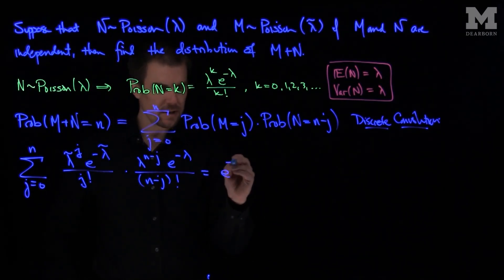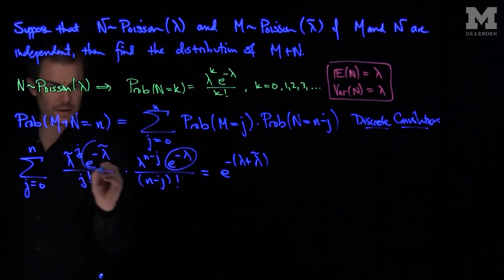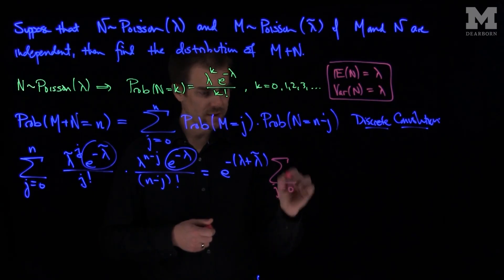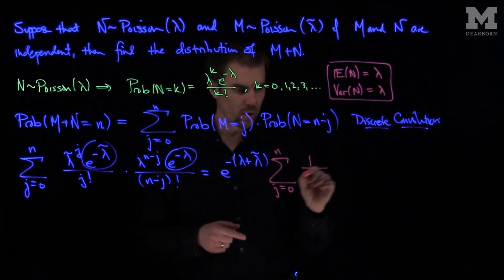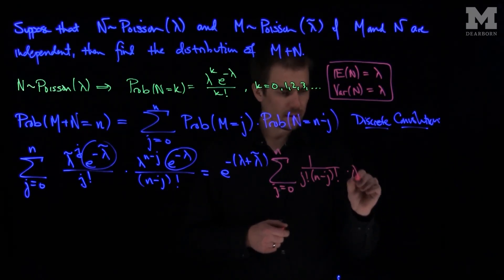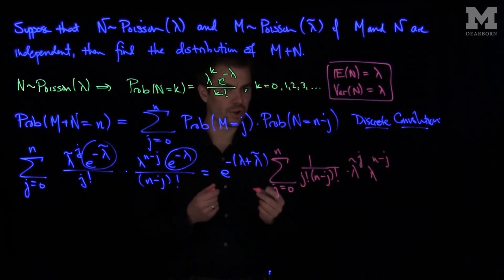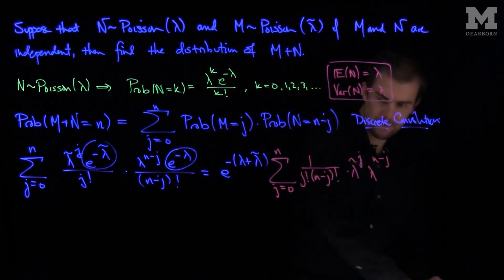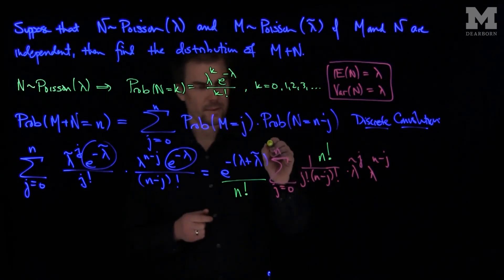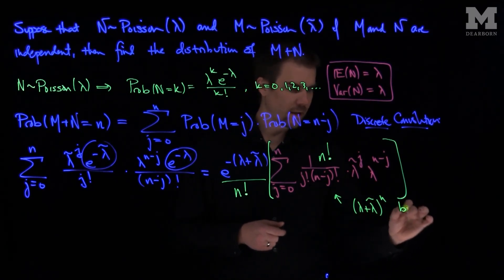Continuing on, we can pull out e to the negative lambda plus lambda tilde from the expression. What's left is the sum j from 0 to n of 1 over j factorial times n minus j factorial, times lambda tilde to the power j, times lambda to the power n minus j. This is almost a binomial expansion — we're just missing an n factorial on top. So we introduce an n factorial on top and divide by n factorial outside the sum. The entire summation is then exactly lambda plus lambda tilde to the power n, by the binomial theorem.